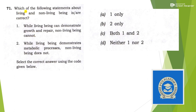First question: which of the following statements about living and non-living beings is correct? Statement one: while living beings can demonstrate growth and repair, non-living beings cannot. This is totally true — a living being has the ability to repair itself and to grow but non-living beings don't. Statement two: while living beings demonstrate metabolic processes, non-living beings don't. This is also a very simple statement. Both statements are true, so the answer will be option C.